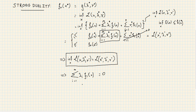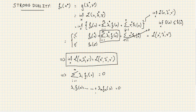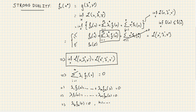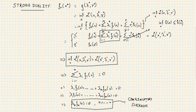Since the sum λ1·f1(x*) + ... + λm·fm(x*) equals zero, and all λ's are positive while all f's are negative, each individual term must be zero. So λk·fk(x*) = 0 for all k from 1 to m. This is what is referred to as complementary slackness — it holds for any primal optimal x* and dual optimal point (λ*, μ*), but only when strong duality holds.